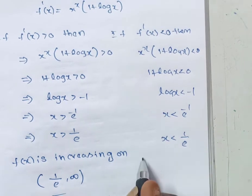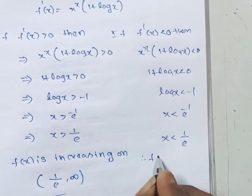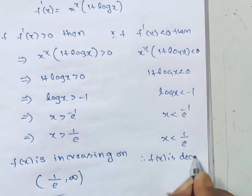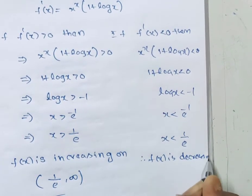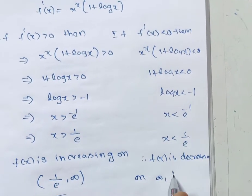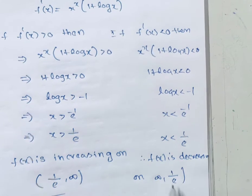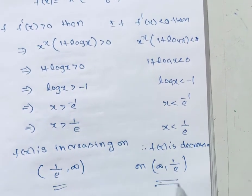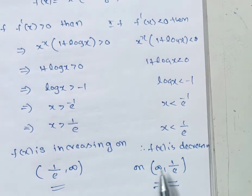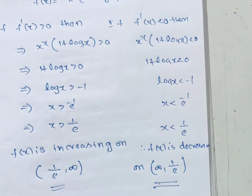Therefore, f(x) is decreasing on (0, 1/e). These are the two intervals: increasing interval is (1/e, ∞) and decreasing interval is (0, 1/e). This is one of the most important very short answer questions in increasing and decreasing functions. Thank you.